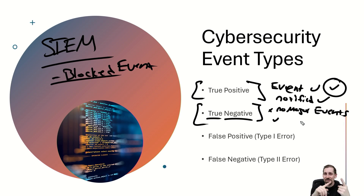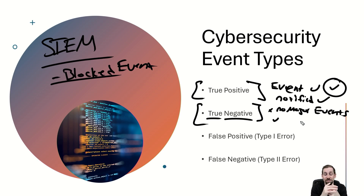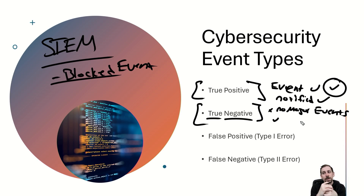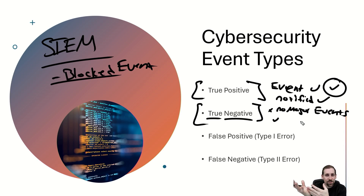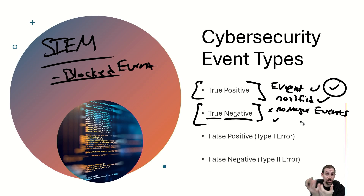So a true positive means an event was logged, noted, and if it was an intrusion prevention system, it was blocked — a true event that was positive. And a true negative means nothing was identified and nothing was blocked, and that is a true statement about the infrastructure. Both are good outcomes.